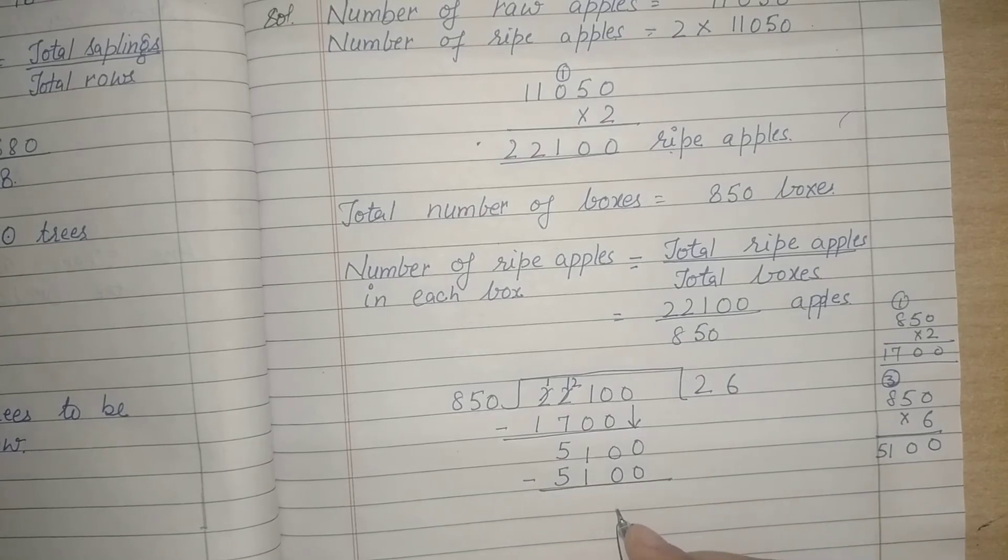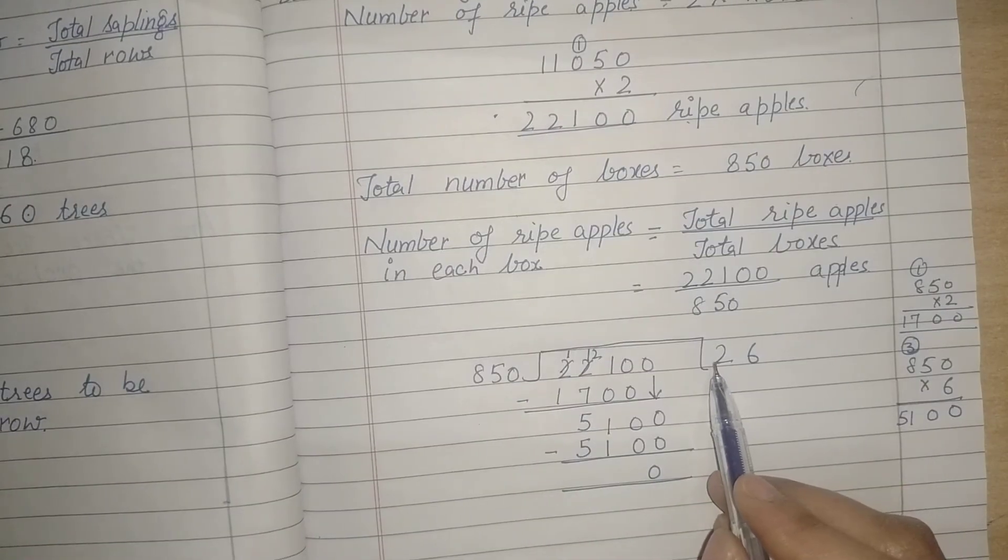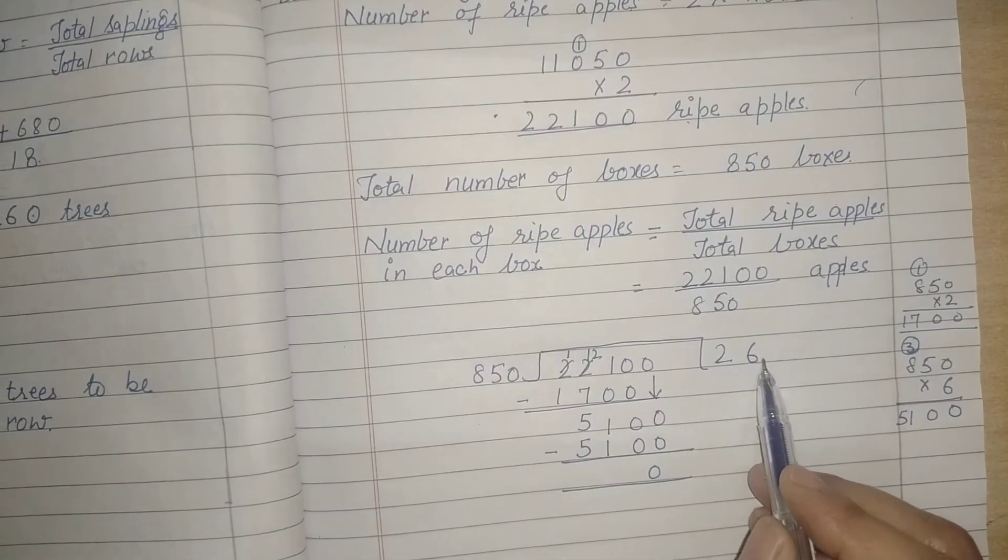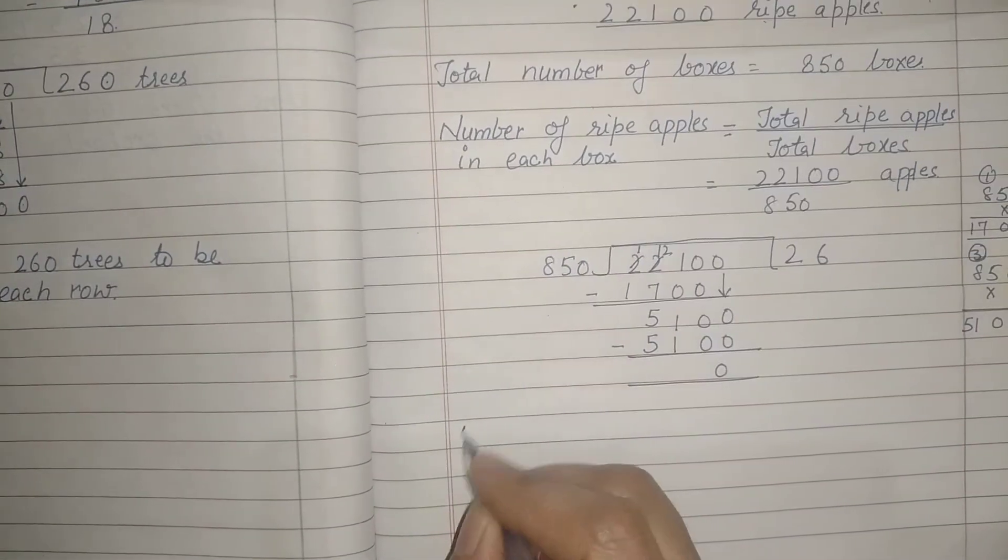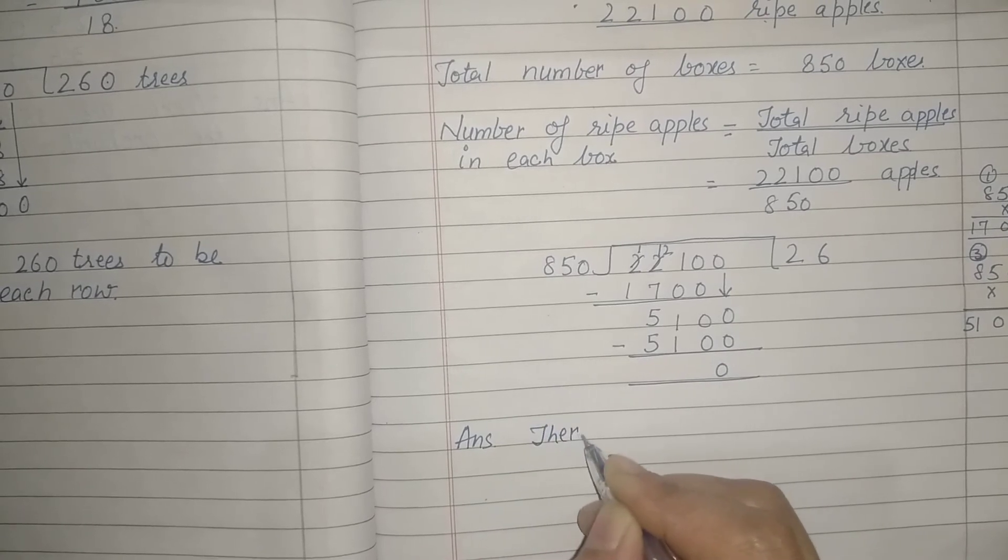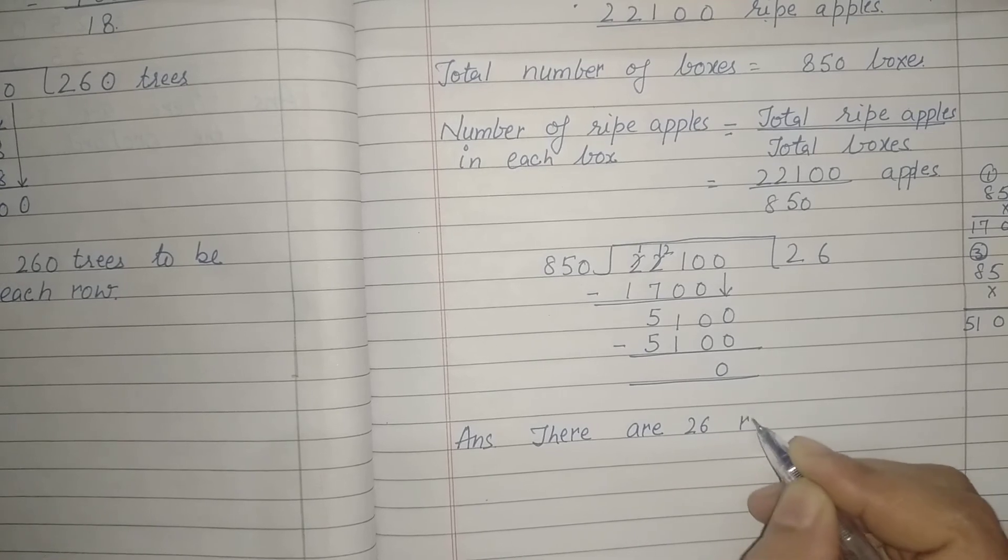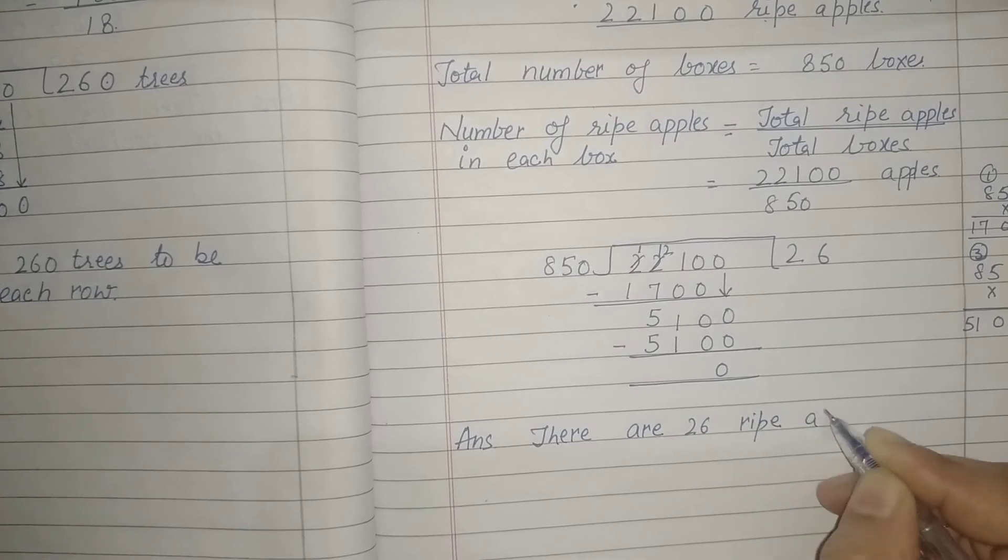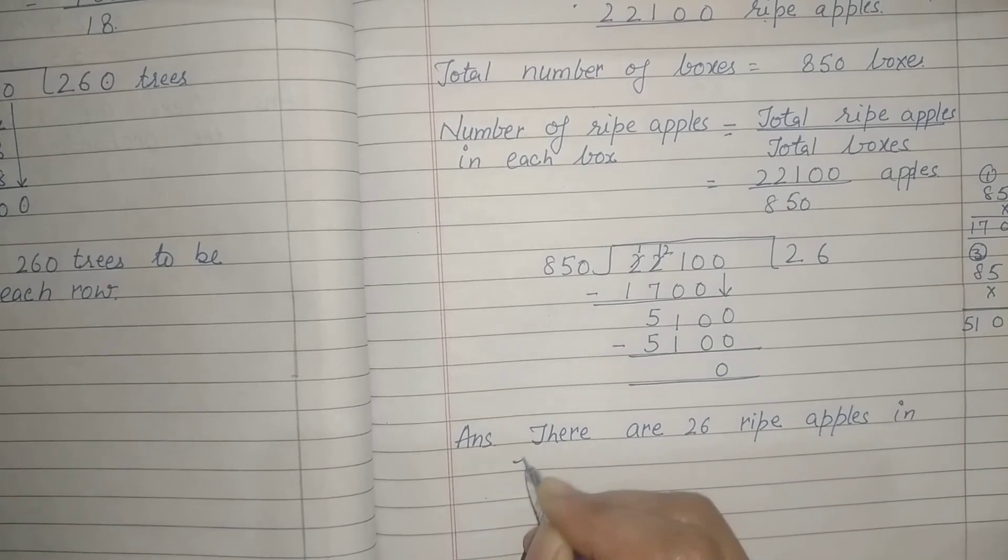Now let us subtract this. We have 0 here, which means we have 26 ripe apples in each box. So finally, the answer is there are 26 ripe apples in each box.